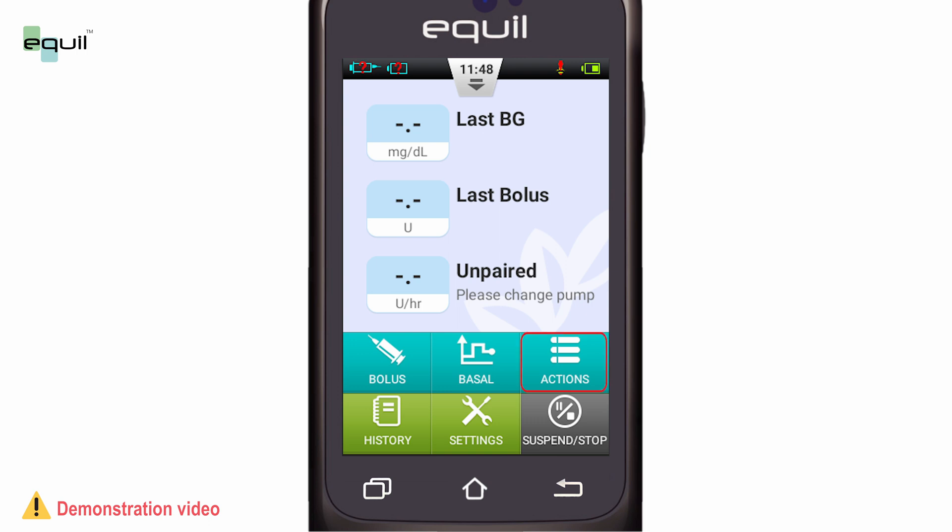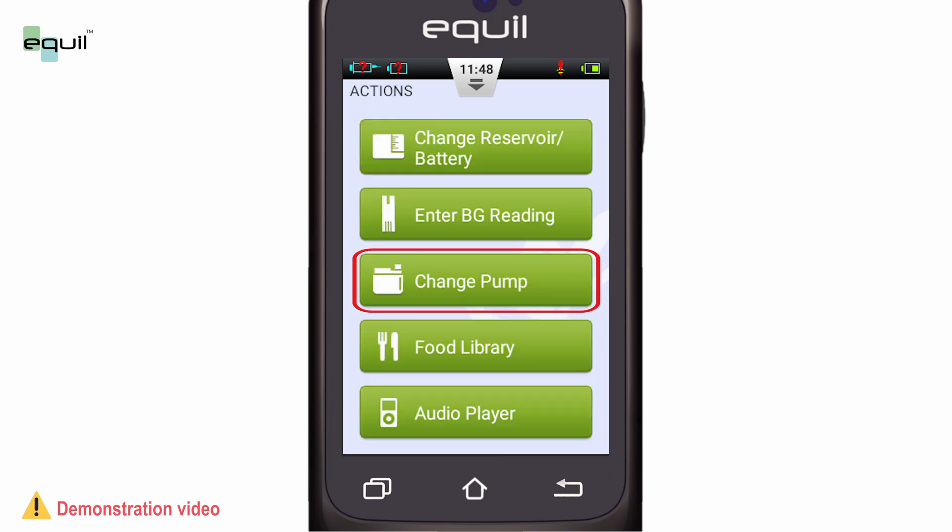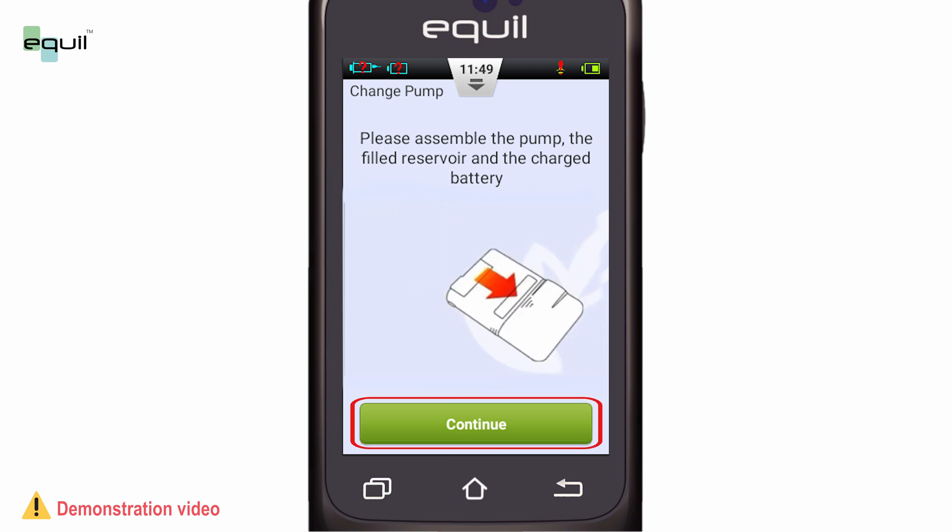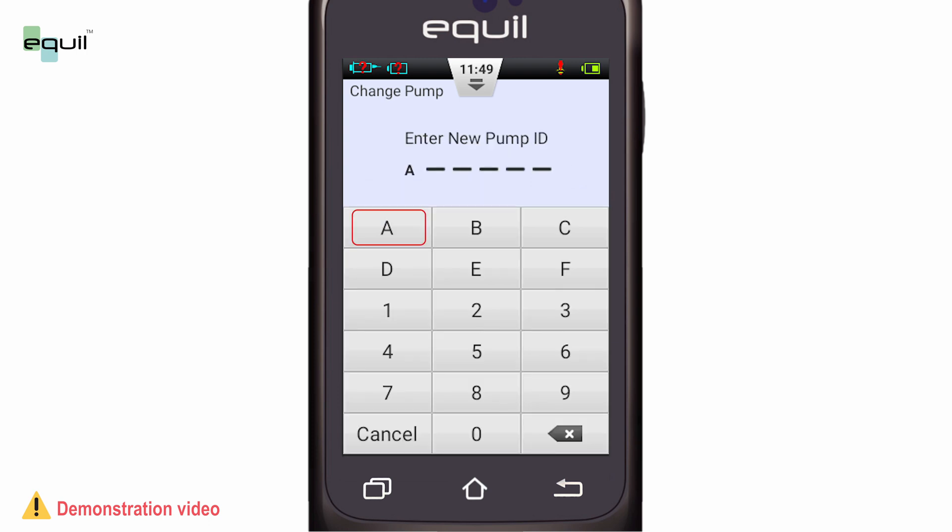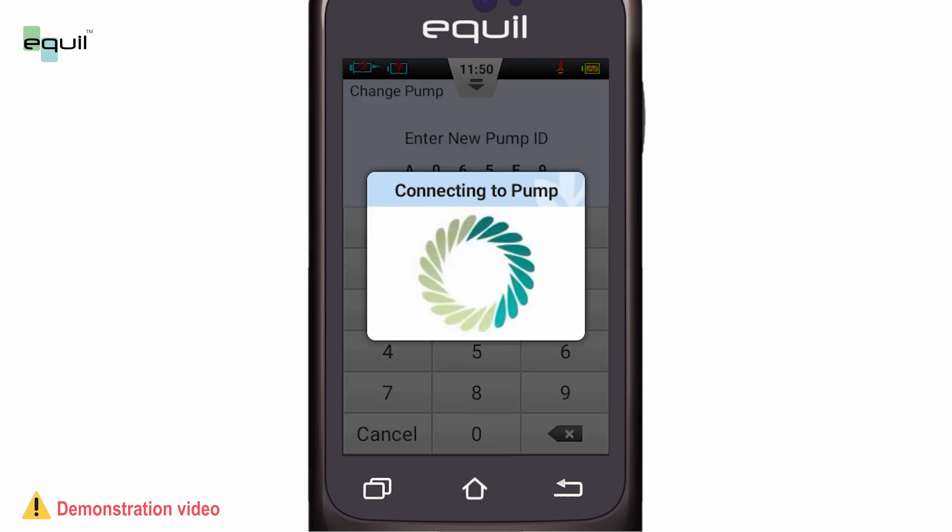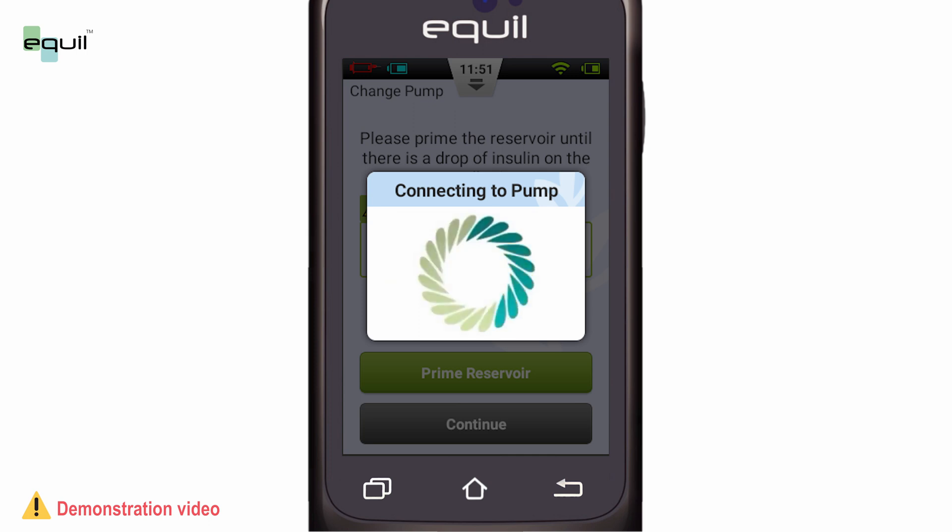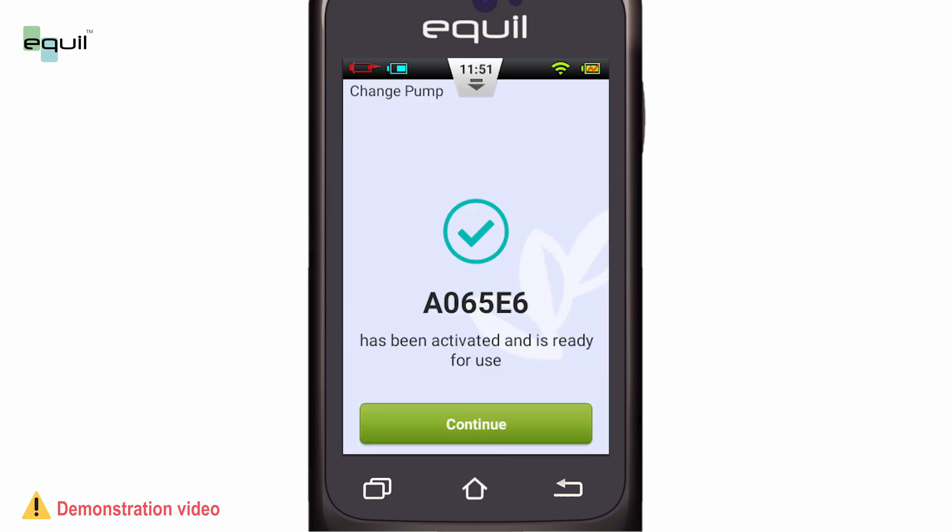Next, from the home screen select Actions, choose Change the pump and press OK to continue. Enter the pump serial number which is printed on the pump. Now the PDA will attempt to connect with the pump and you should see an animation indicating that the pump has been connected.